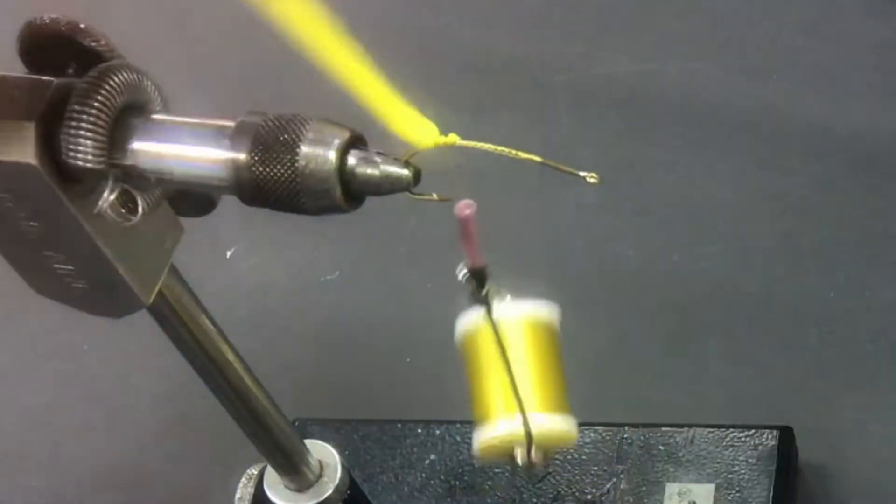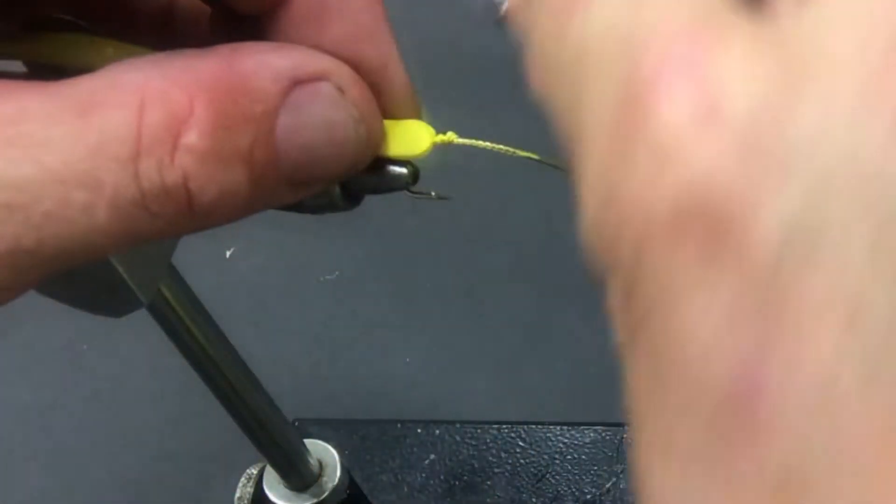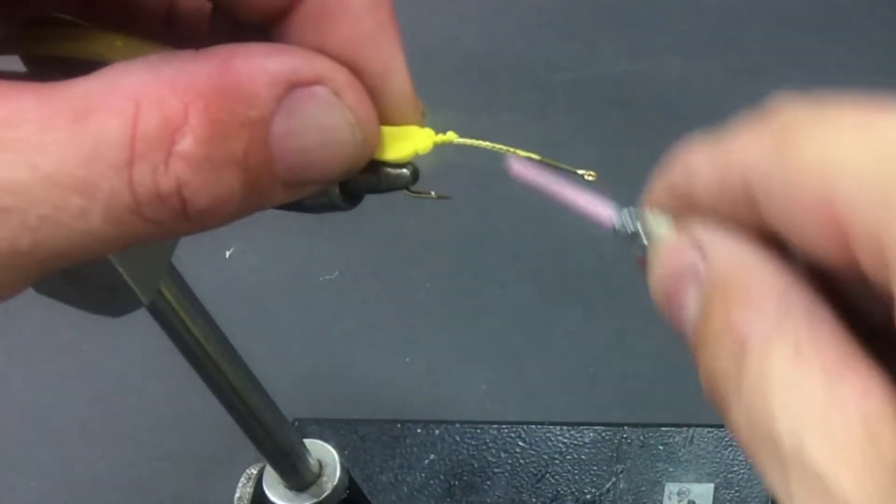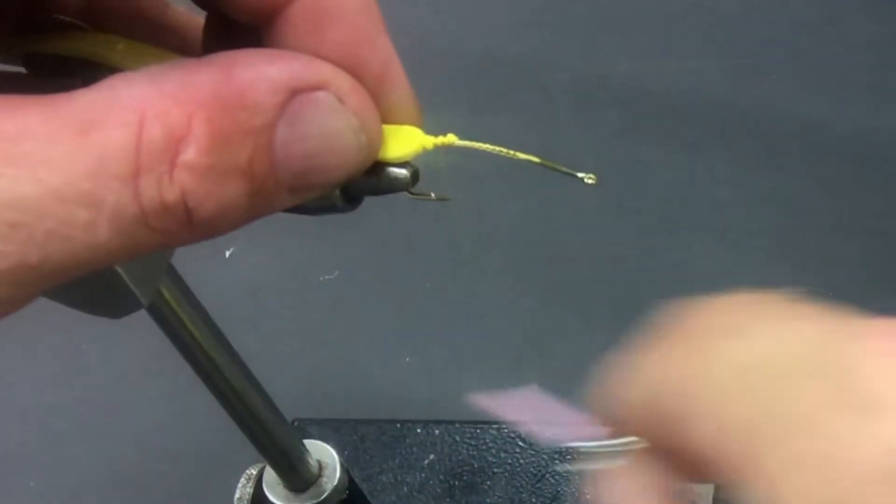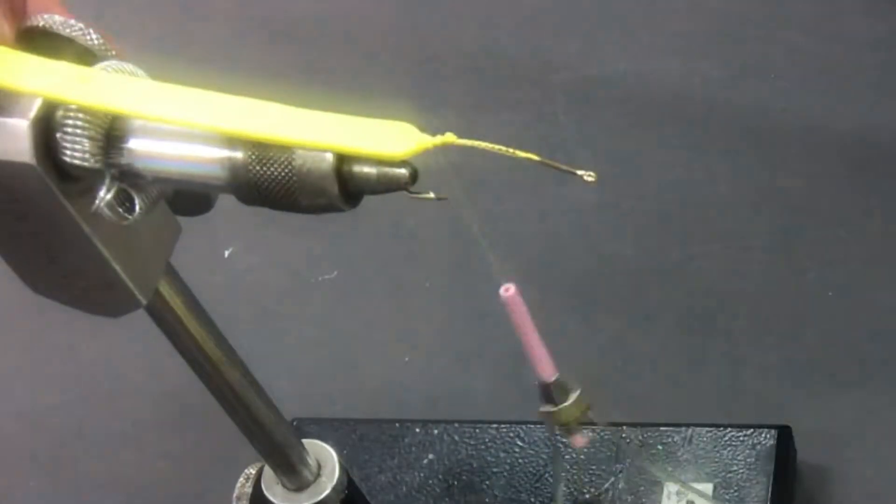Then we're gonna go back to the beginning. Fold it over. Make sure we can't see any thread wraps. If we can, like I can, we're gonna wrap back just a little bit. We don't want to see any thread wraps. Now I can't see them, so we've got that tied in on top.